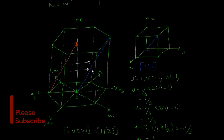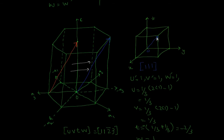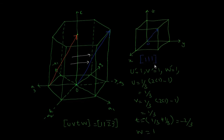Now we deal with three axes: a1, a2, and c. If we draw this direction in a cube, it starts from the origin and ends at this corner, where x-axis is a1, y-axis is a2, and z-axis is c. We move one along x, one along y, and one along z to reach that point, so the three indices are 1 1 1.